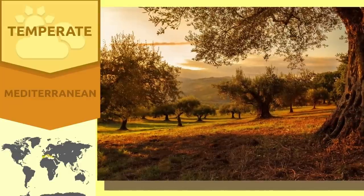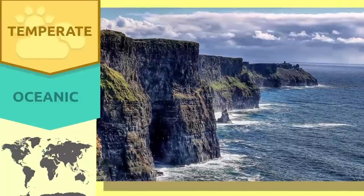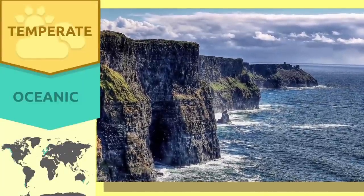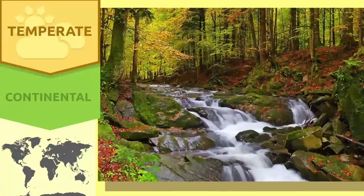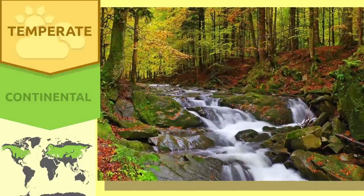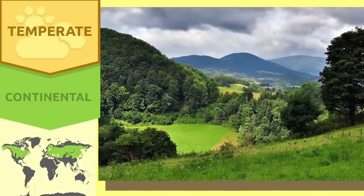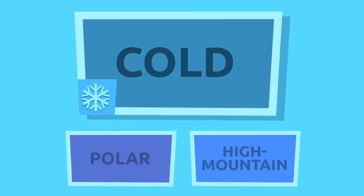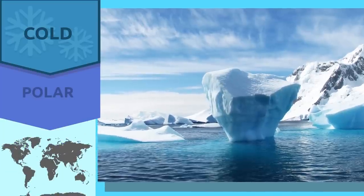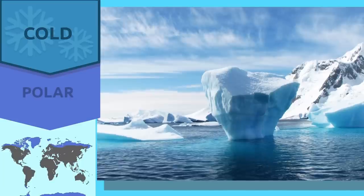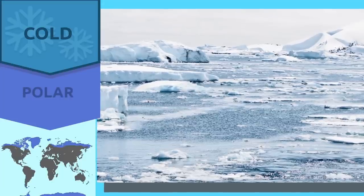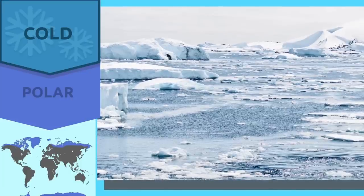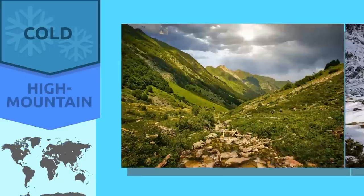The Mediterranean, oceanic, and continental climates are temperate climates. The Mediterranean climate, found along the Mediterranean coast, has high temperatures in summer and mild temperatures in winter with little rain. The oceanic climate, found near the Atlantic Ocean and central Europe, has mild summers and heavy precipitation in all seasons. The continental climate, found in eastern Europe, has high temperatures in summer and very low temperatures in winter, with precipitation mainly in summer.